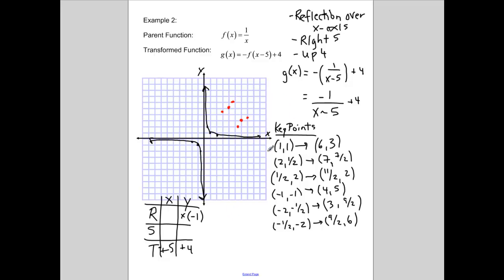You might also be able to see where our asymptotes are. Our asymptotes also get transformed by the RST chart.